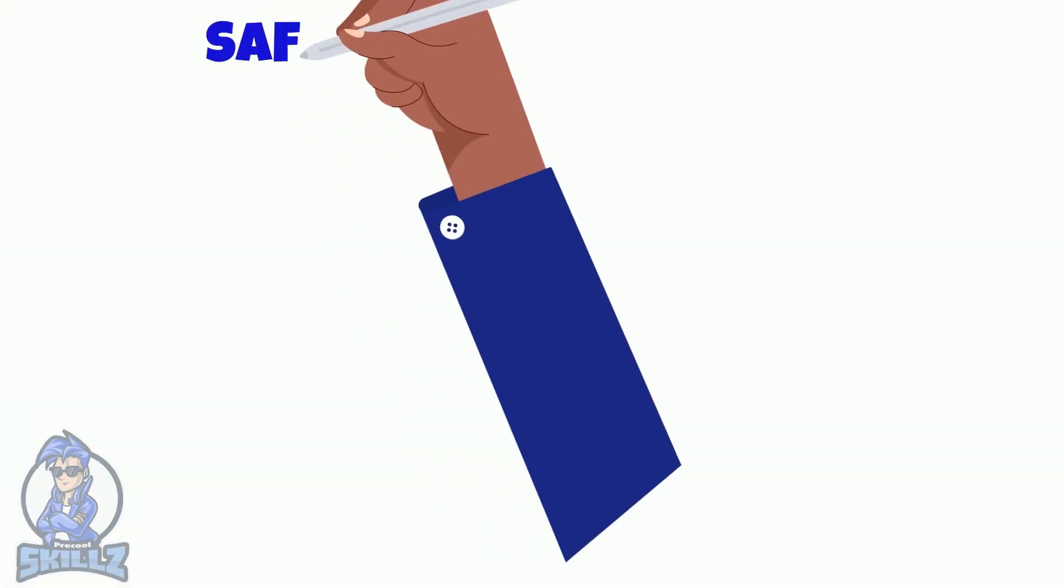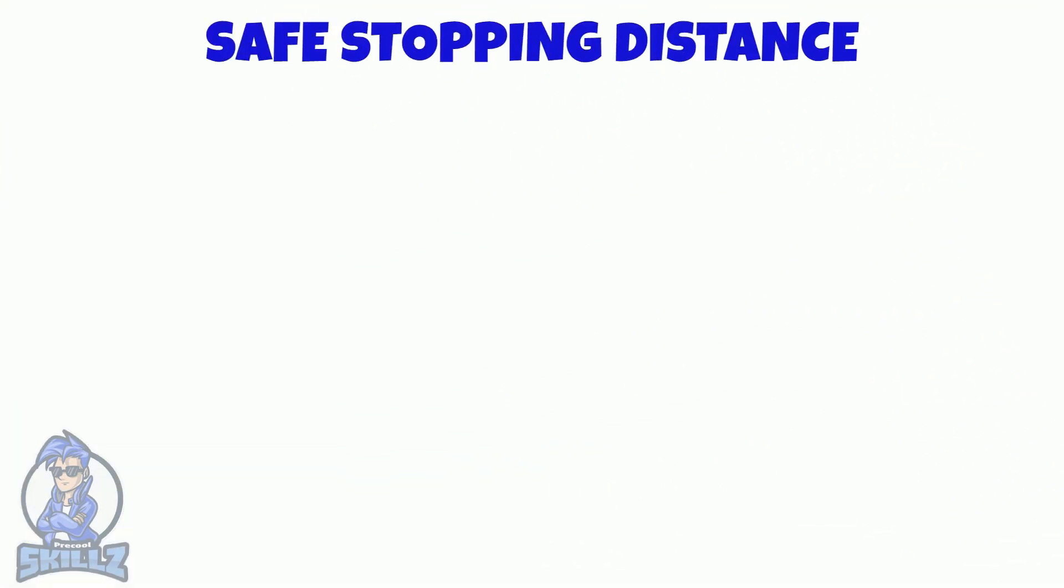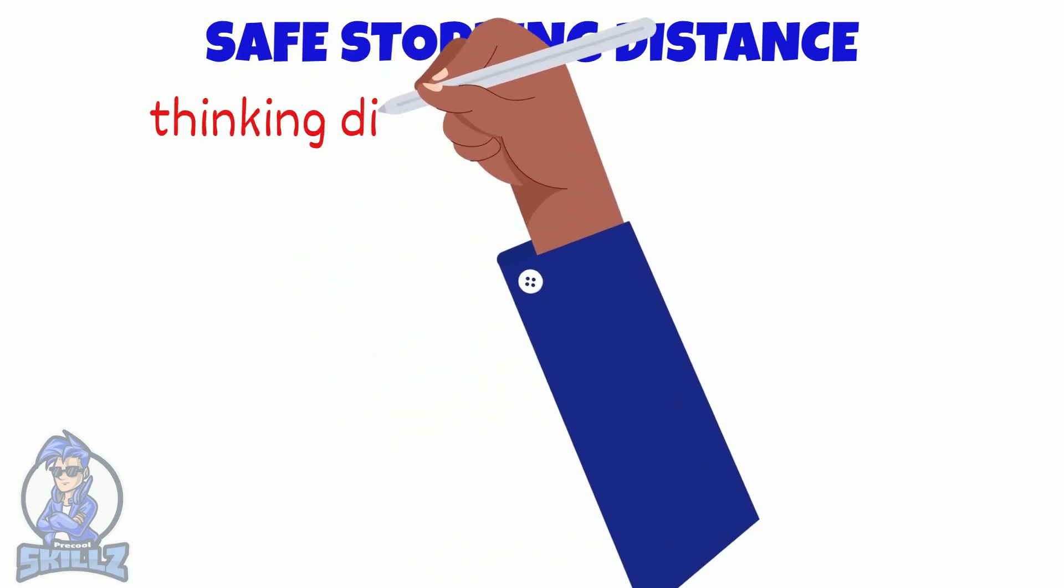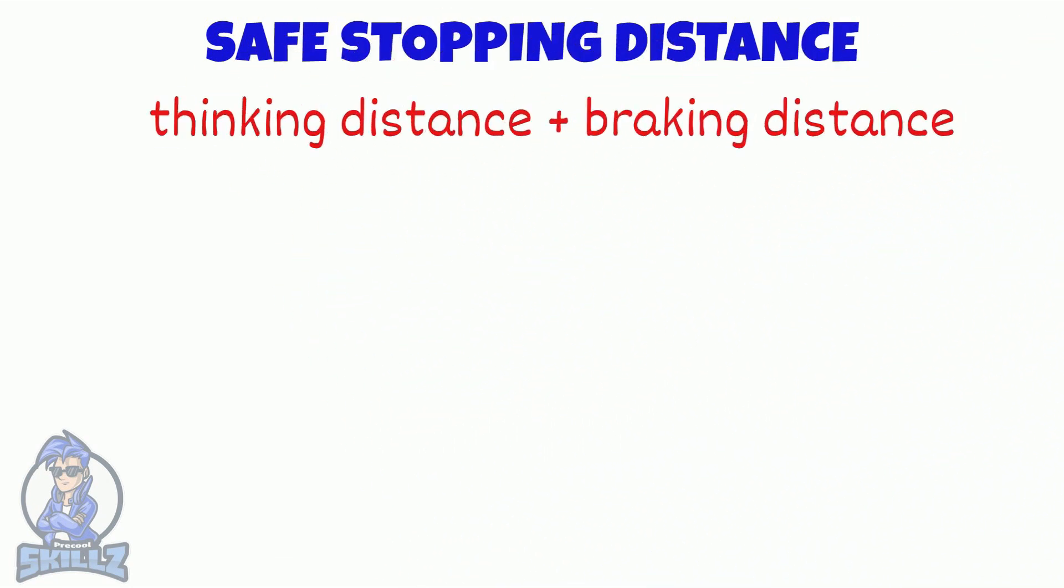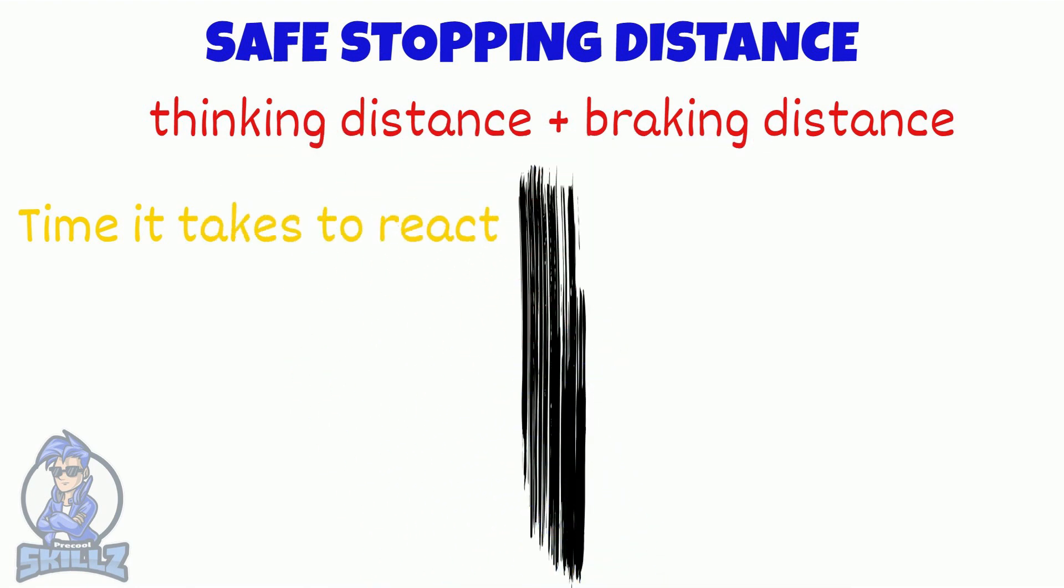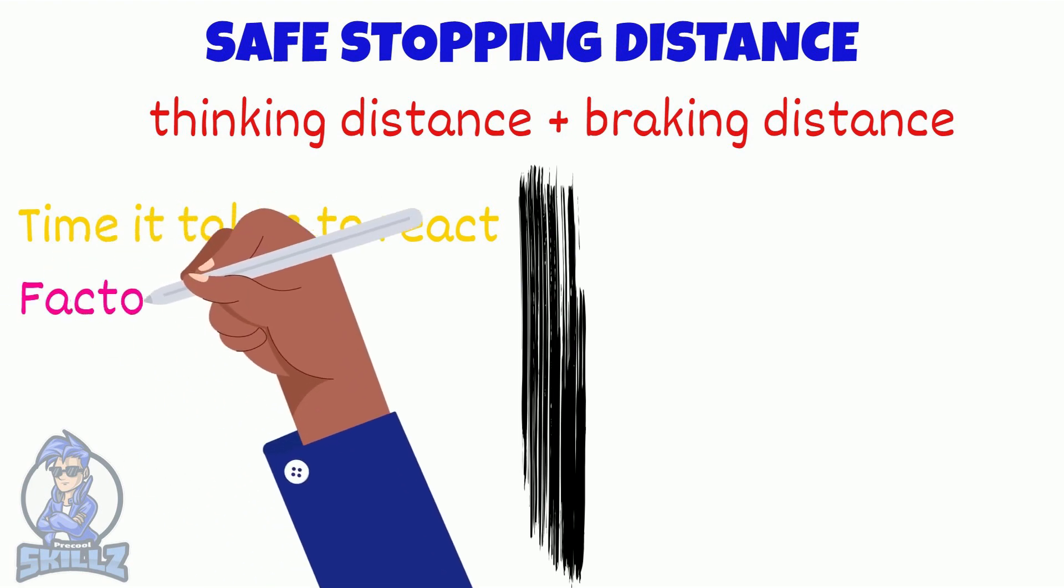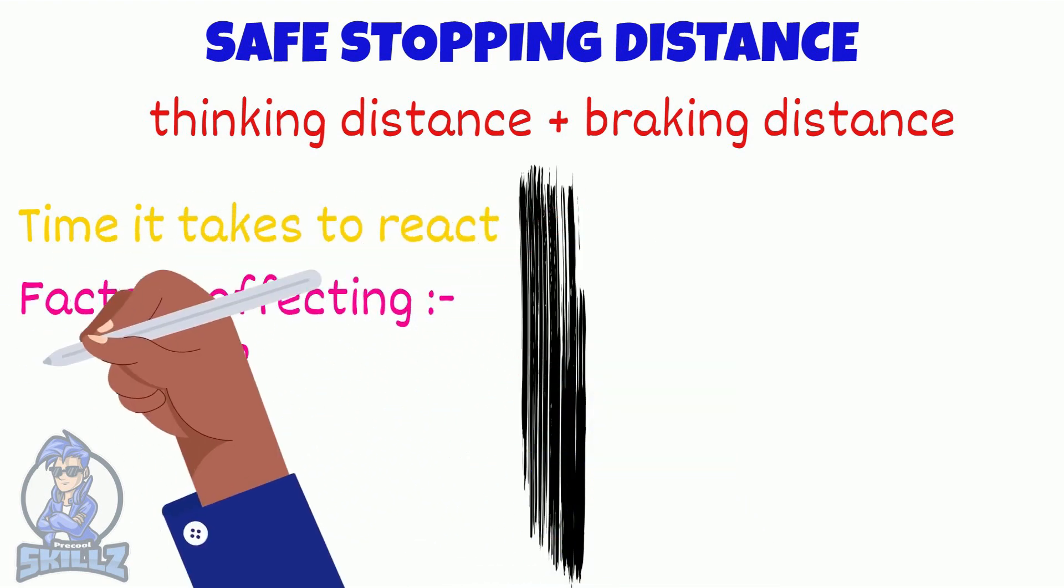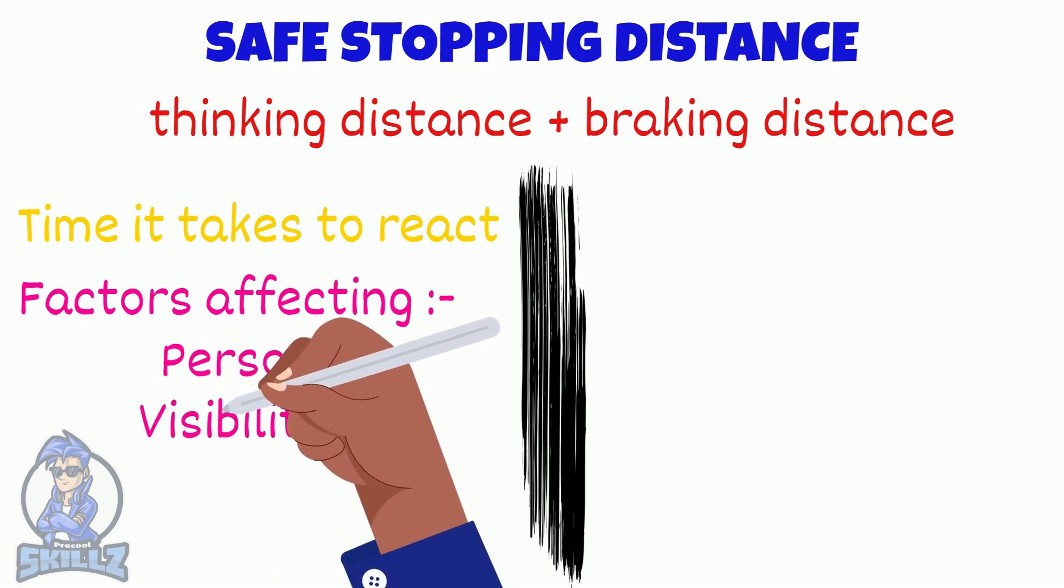Next we'll look at safe stopping distance. The stopping distance of a vehicle is the total of the thinking and braking distance. The faster the car, the greater the stopping distance. The thinking distance is the time it takes for you to react. If you are driving and you suddenly see a man blocking your path, the distance it takes for you to react to this is called the thinking distance. Many factors affect the thinking distance including the person driving, the visibility and the speed.